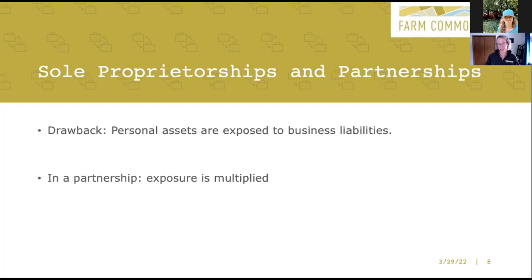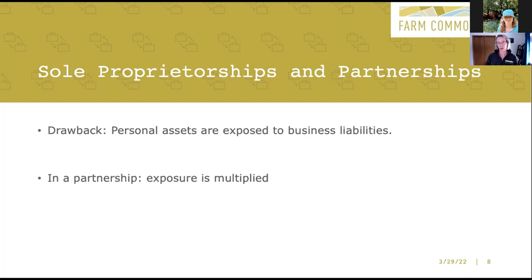A lot of folks hear this and think it sounds terrible. But statistics show that 45% of farmers are organized this way. Why? Some farmers don't know the risk they're exposed to, but others do see this risk and don't see it as a major deal breaker. Some farmers are relying on the bankruptcy process to discharge debts and liabilities if needed. Others may feel that the risk of someone actually pursuing their personal assets is low, which can be accurate. But for other farmers, this risk is not acceptable.